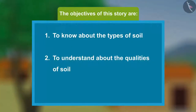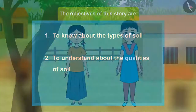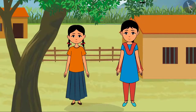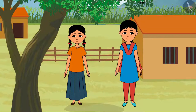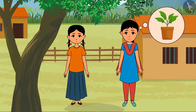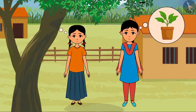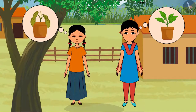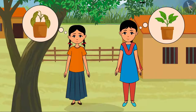The objectives of this story are to know about the types of soil and to understand about the qualities of soil. This is Nilu and that is Minu. Both of them had planted a plant in two different pots. Nilu's plant had become lush and green, however Minu's plant did not grow much and had no fresh green leaves. They were discussing about the same.